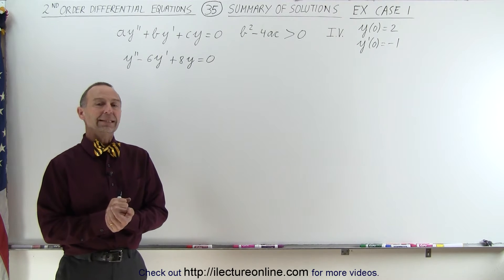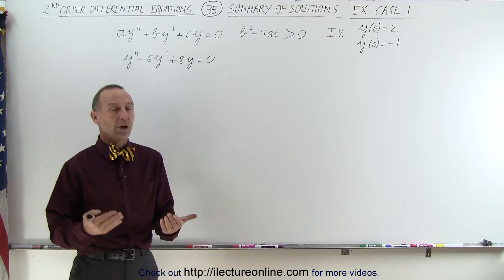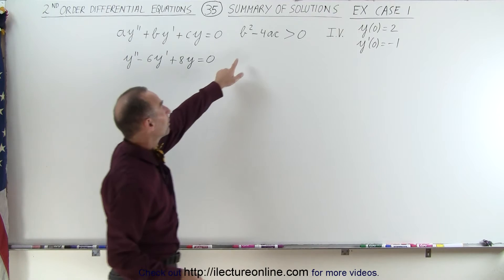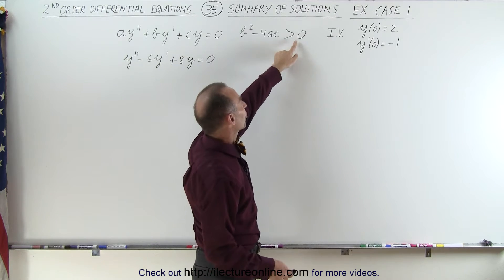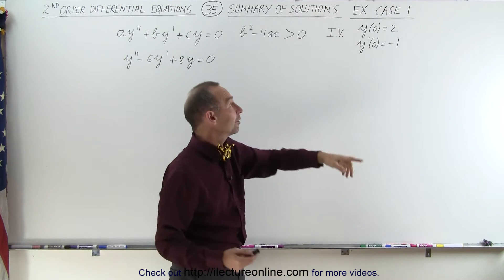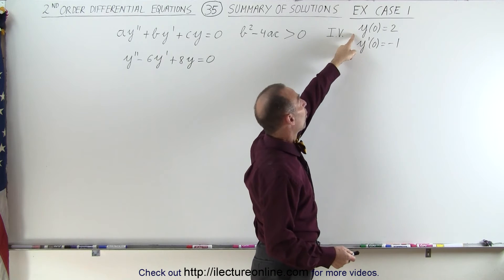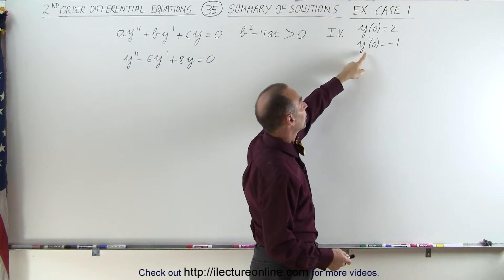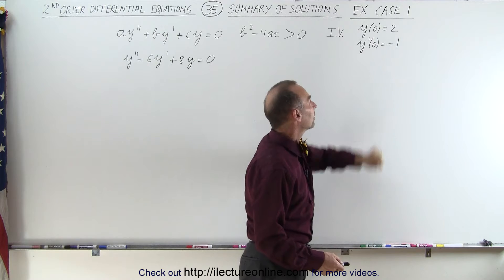Welcome to our lecture online. Here's an example of case 1, where b squared minus 4ac is larger than 0. We've also been given some initial conditions: y at 0 is equal to 2 and the derivative of y at 0 is equal to negative 1.